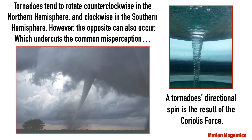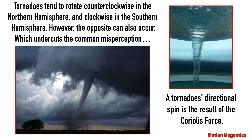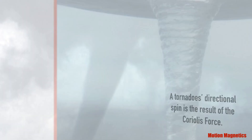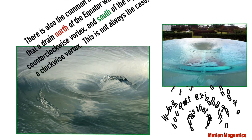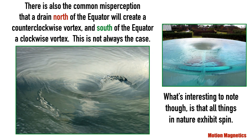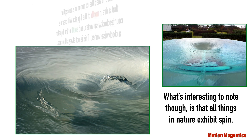Tornadoes tend to rotate counterclockwise in the northern hemisphere and clockwise in the southern hemisphere. However, the opposite can occur, which undercuts the common misconception. A tornado's directional spin is actually a result of the Coriolis force. There's also the common misconception that a drain north of the equator will create a counterclockwise vortex and south of the equator a clockwise vortex. This is not always the case. What's interesting to note, though, is that all things in nature exhibit spin.